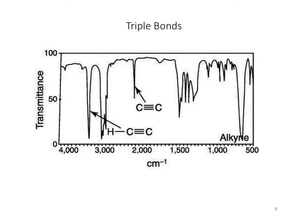The triple bond region is between about 2,100 and 2,500 wavenumbers. This is typical of a carbon-carbon triple bond. Carbon-nitrogen triple bonds look very similar, but if there are no nitrogens in the formula, we know it must be carbon-carbon. If there is a nitrogen and we don't see evidence of amines, that's a good indication of a carbon-nitrogen triple bond. Also, if one carbon of the triple bond is connected to a hydrogen, we expect a CH stretch at about 3,300 wavenumbers — so seeing both a triple bond peak and a peak at 3,300 suggests a carbon-carbon triple bond rather than carbon-nitrogen.